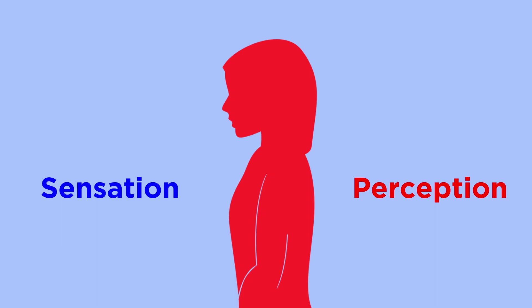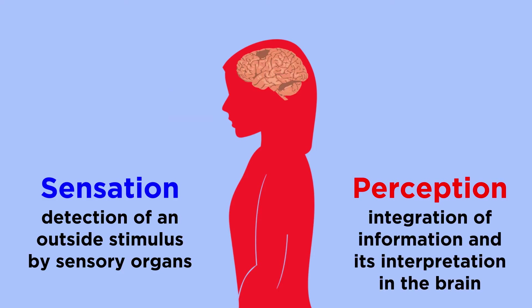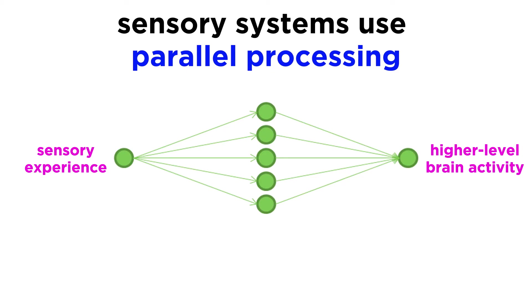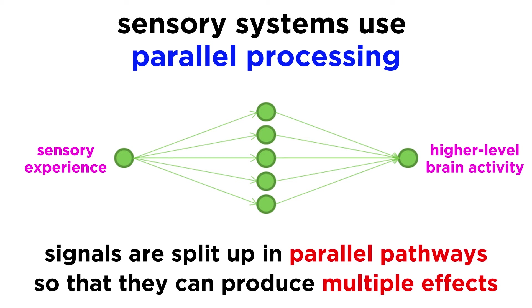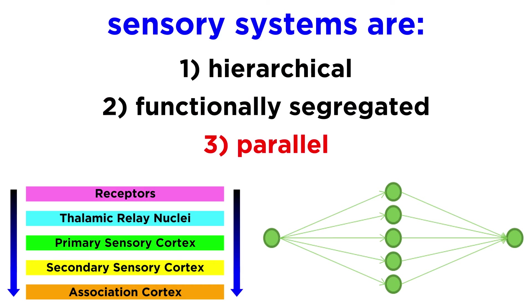We can also make the distinction between sensation and perception. Sensation involves the detection of a stimulus, which occurs at the sensory organs, while perception involves the integration of information and its interpretation, which happens exclusively in the brain. Sensory systems heavily feature parallel processing, such that a signal can be split up into parallel pathways and thus produce multiple effects. Putting this together, we can say that any sensory system is hierarchical, functionally segregated, and parallel. The combined activity in all of these regions is what generates perception and therefore our subjective experience of reality.